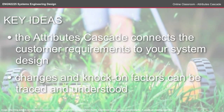A recap of the key ideas from the Attributes Cascade online classroom: the Attributes Cascade connects the customer requirements to your system design, so the intention behind all design decisions can be related to the customer requirements. You can also begin an analysis of your design by looking at the changes and knock-on factors that can be traced between the customer requirements and the system attributes, to help provide a better design. Make sure to check out the self-test for this topic and the reading available on Moodle, and we'll see you next time.